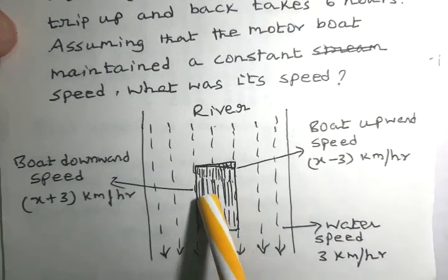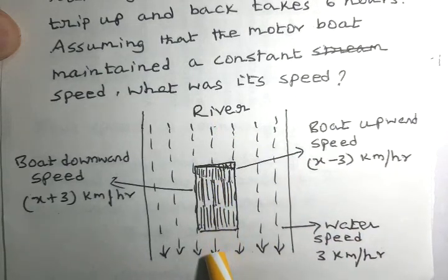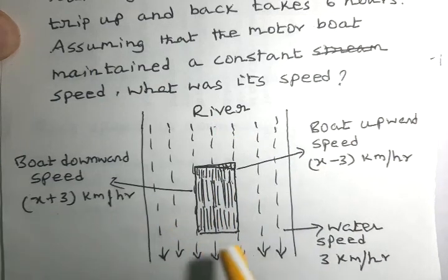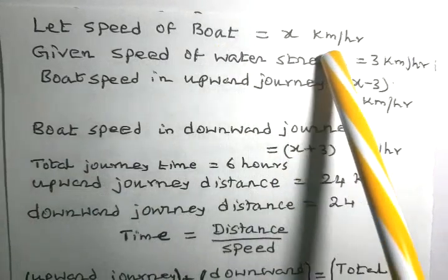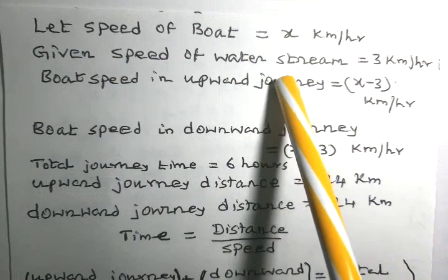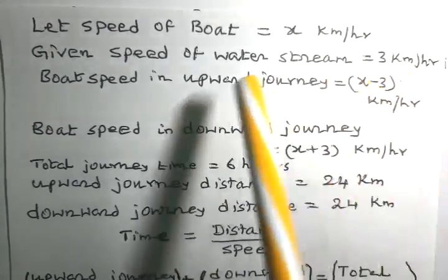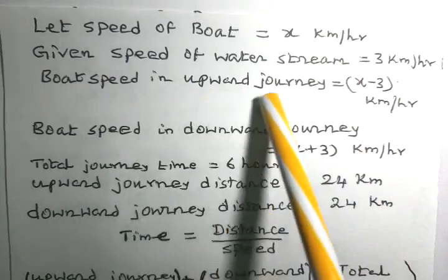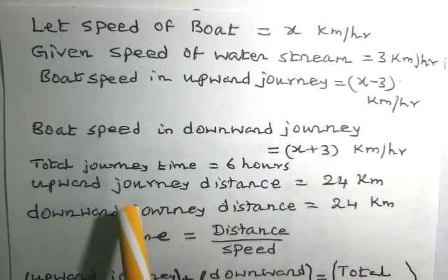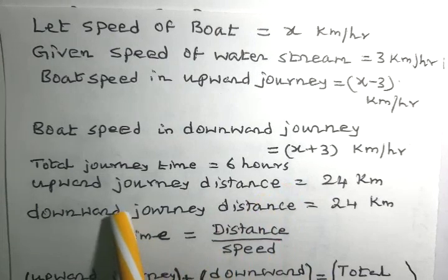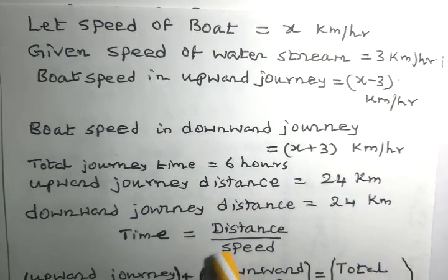In the downward direction the boat's speed is x plus 3 km per hour. Let the speed of the boat be x km per hour, and the speed of the current is 3 km per hour. So the boat's speed upstream is x minus 3 km per hour and downstream is x plus 3 km per hour. The total journey time is 6 hours, and both upward and downward journey distances are 24 kilometers. Using the formula time equals distance divided by speed: